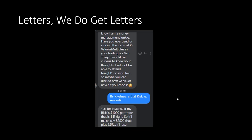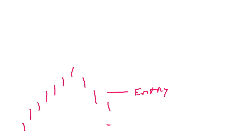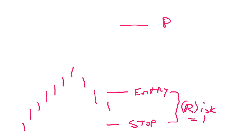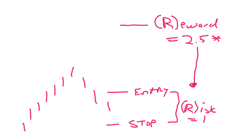Somebody was asking about R. If you risk $1,000, that's 1R. If you make $2,500 on that trade, that's 2.5R. In theory that sounds fantastic, so let's break that down. You enter a pullback, your risk is 1R if stopped out. If you take profits at 2.5R — risk $1,000, make $2,500 — that sounds fantastic.